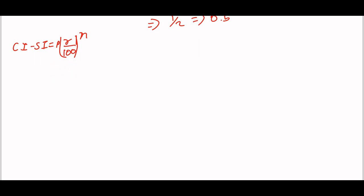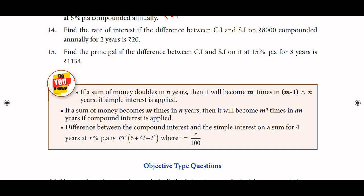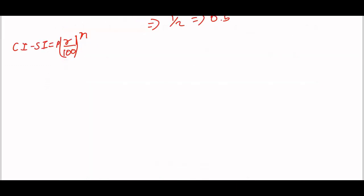The difference is given as ₹20. So 20 rupees is equal to principal amount 8,000. Rate of interest divided by 100 into number of years equal to 2. Here we cancel zeros, so 8 is equal to 1, and 2 divided by 800 is equal to 2.